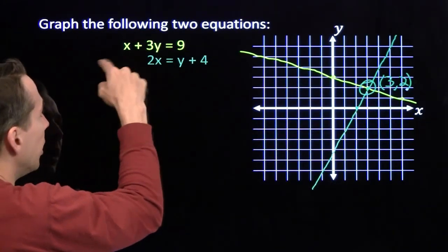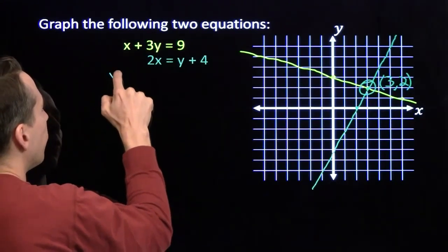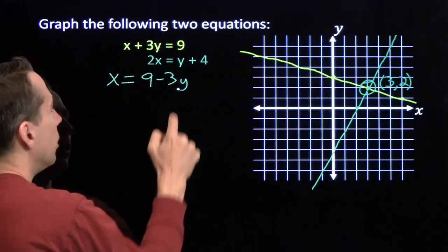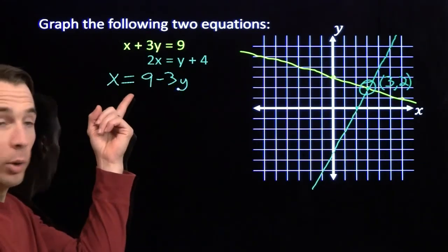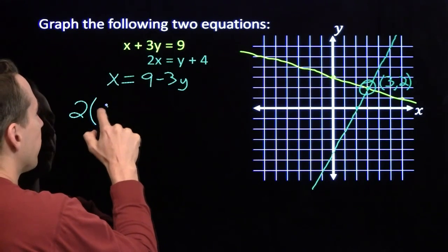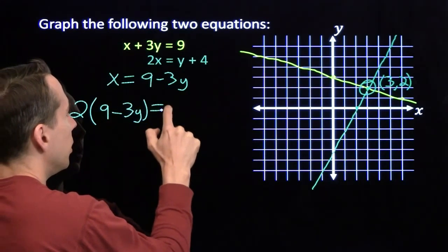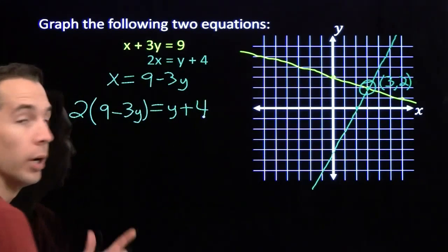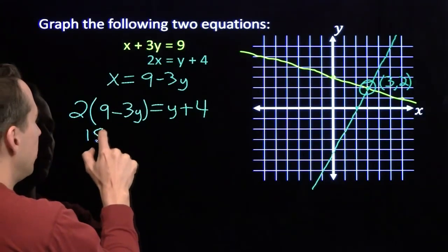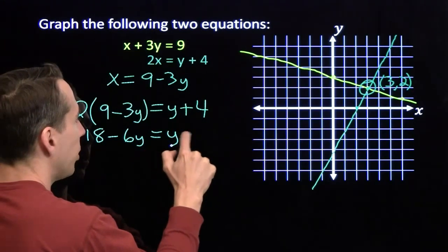Let's go ahead and check that real quick. If I solve this first equation for x in terms of y, I'll get x equals 9 minus 3y. Then I'm going to substitute that into the second equation for x, and I get 2 times (9 minus 3y) equals y plus 4. Now we're going to expand the left-hand side: we get 18 minus 6y equals y plus 4.